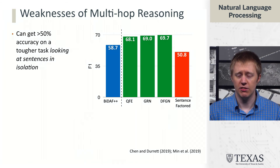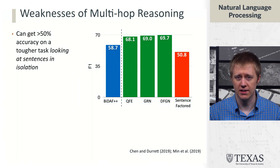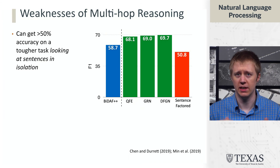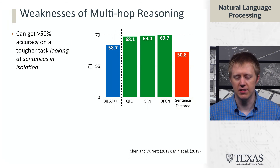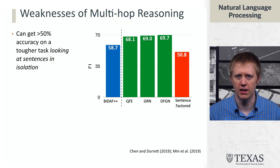Another test is to have the model consider each sentence in isolation. On WikiHop, the model is able to get around 50% token F1 overlap with the correct answer that way. If a model is only considering each sentence in isolation, it cannot be doing multi-hop reasoning. While multi-hop reasoning is an interesting capability, the current datasets fall short of actually requiring it strongly. This is a concern and means this is not necessarily the easiest path forward for building harder QA settings.